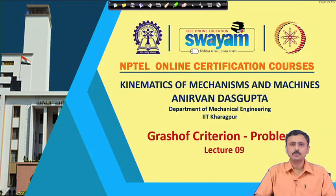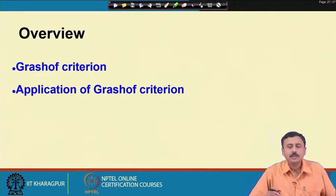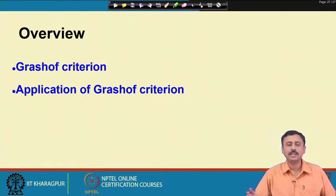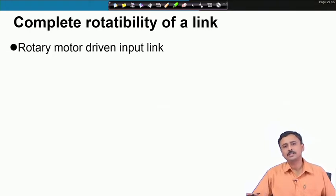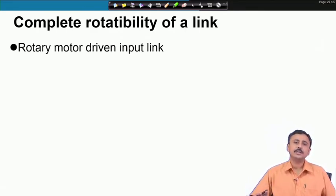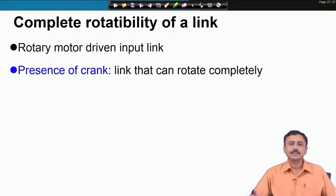In the previous lecture, we discussed the Grashof criterion which tells us the presence of a crank in a kinematic chain. Today, I am going to discuss some problems based on the Grashof criterion. We will have a quick recapitulation of its significance and then I will show you its application. In many applications, mechanisms require a motor which is rotating continuously, so we require one link that can rotate completely — this link is known as the crank.